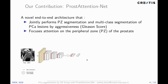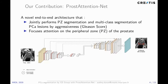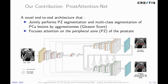This latent representation is then connected to two decoding branches. The first one performs the binary PZ segmentation, and the second one performs semantic segmentation of the image into seven classes: one for background, one for PZ,